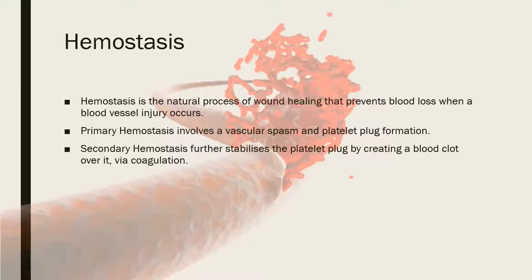Vascular spasm occurs first, then platelet plug formation, and then you enter into secondary hemostasis. The purpose of secondary hemostasis is to further stabilize the platelet plug formed in primary hemostasis, and this occurs by blood coagulation, creating a blood clot.